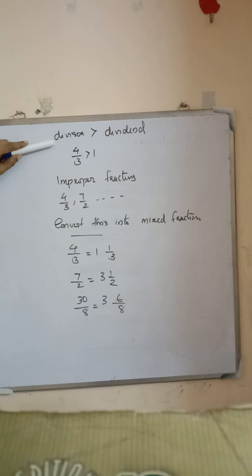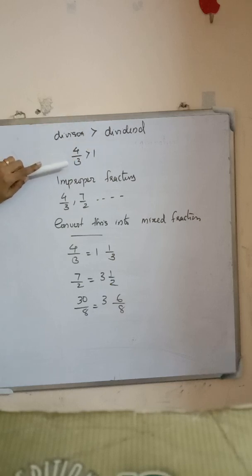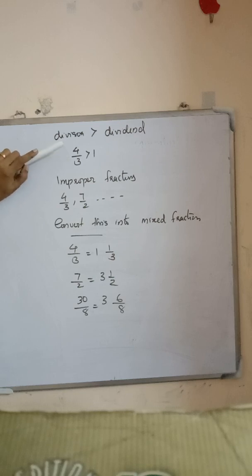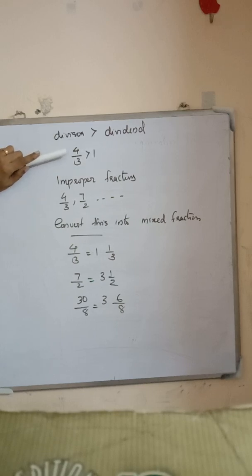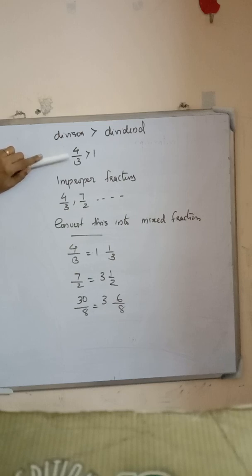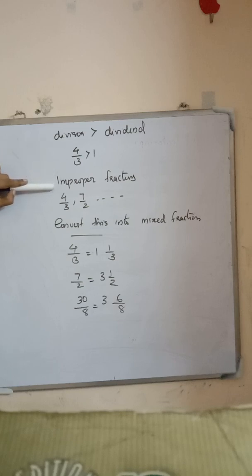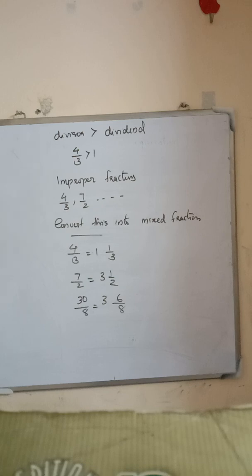In some cases, the dividend is greater than the divisor — for example, 4 divided by 3. Here 4 is greater than 3, but we cannot express this as a whole number since the value is greater than 1. This type of fraction is called an improper fraction. Examples are 4 by 3, 7 by 2, etc.